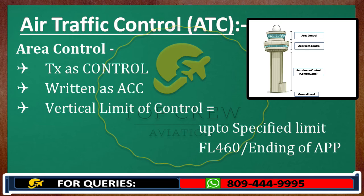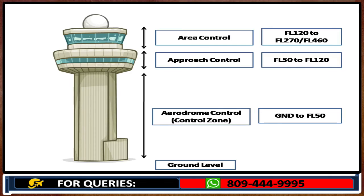Let's revise. Look at this figure. From ground level to the specified limit — let's say flight level 5-0 — that is tower. From flight level 5-0 to flight level 1-2-0, jurisdiction is approach. Above flight level 1-2-0 — let's say if it is mentioned 2-7-0 — then control goes up to 2-7-0. If there is no upper limit mentioned on any chart, then we assume that control is from flight level 1-2-0 to flight level 4-6-0.